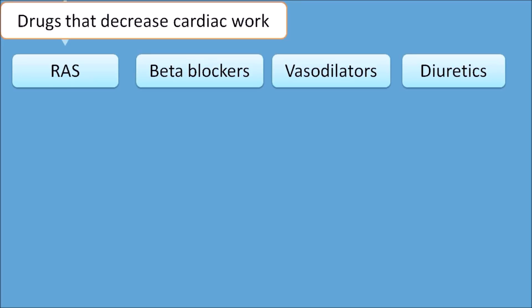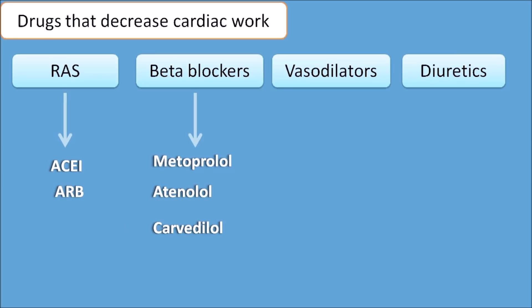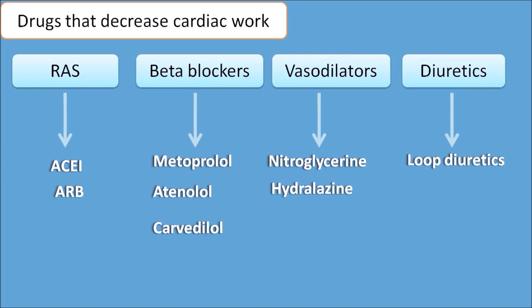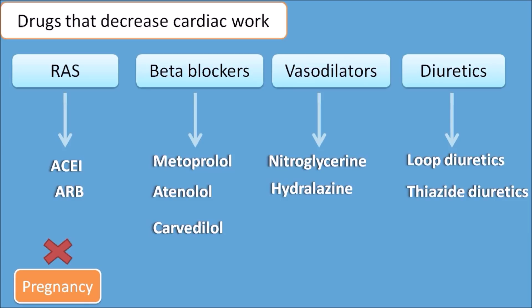Drugs acting on the RAS include ACE inhibitors and ARBs. Beta blockers include metoprolol, atenolol, and carvedilol. Vasodilators include nitroglycerin and hydralazine; diuretics are mainly loop diuretics and thiazide diuretics. Importantly, ACE inhibitors and ARBs should not be given in pregnancy as both are teratogenic. Also, calcium channel blockers should not be used as vasodilators in heart failure as they decrease the force of contraction.